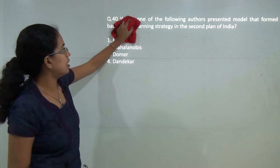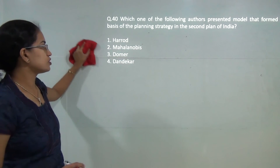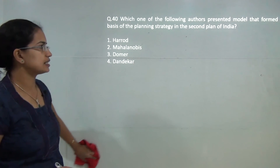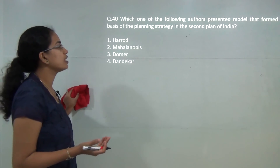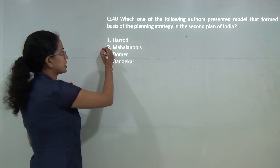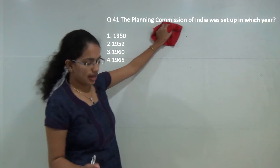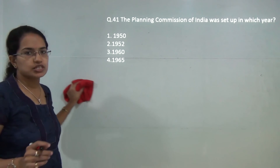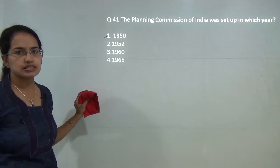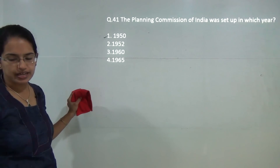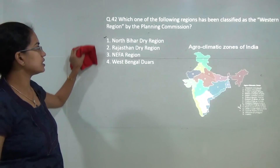Next, who presented the planning strategy for the second plan? Mahalanobis presented it for the second five-year plan. For the first five-year plan it was Harrod and Domer who presented their model — so option 2 is correct. The planning commission was established on 15 March 1950, so option 1 is correct. However, recently it has been replaced by a new body known as NITI Aayog, which we have covered in a separate lecture.